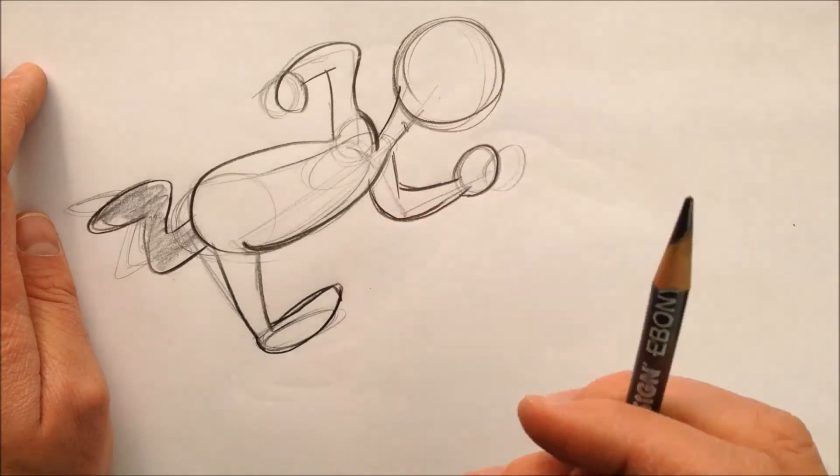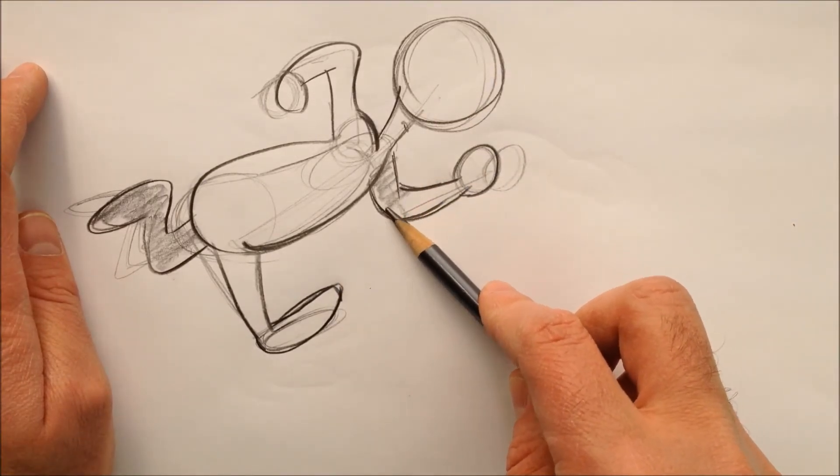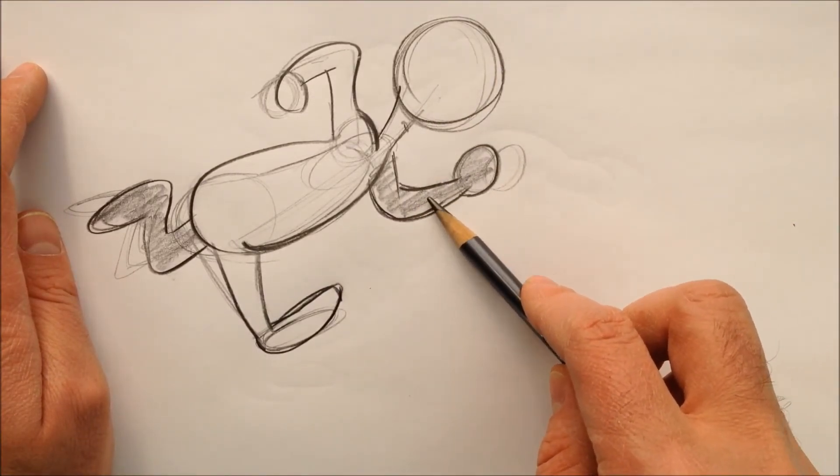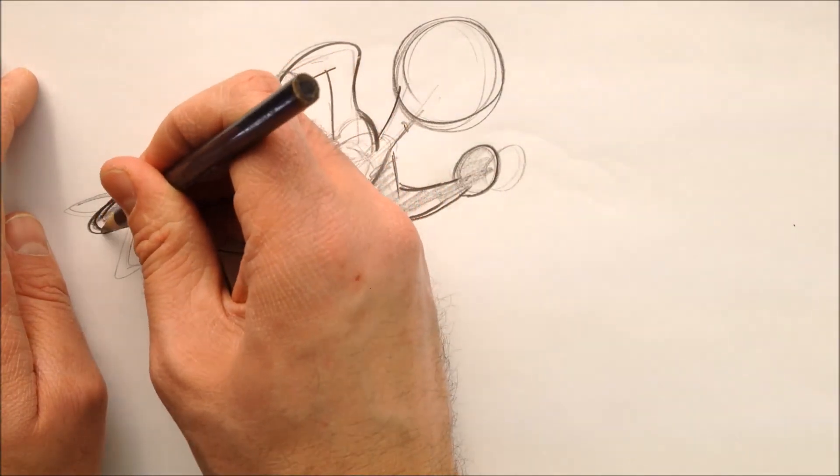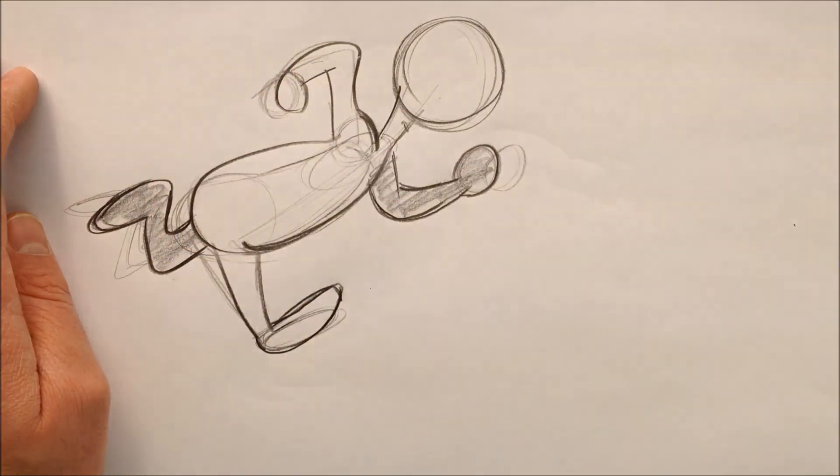Darken the head in, and we'll shade in that back arm. All right, so that's our first pose for the run sequence.